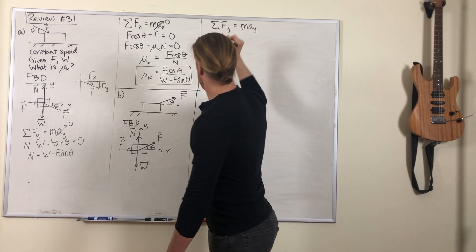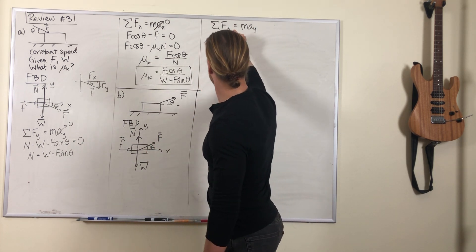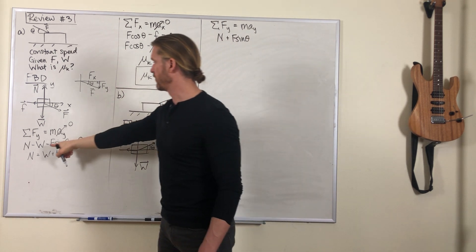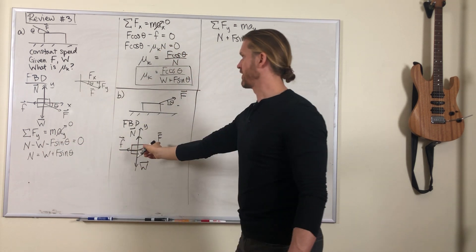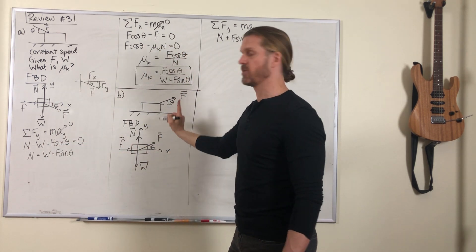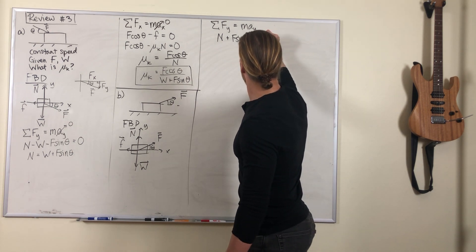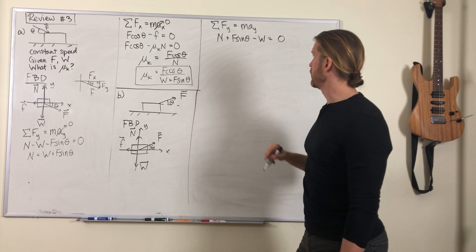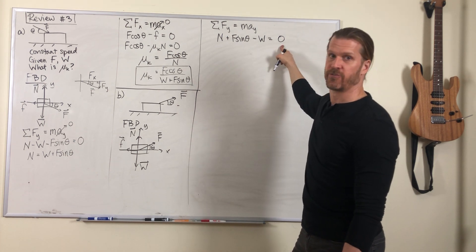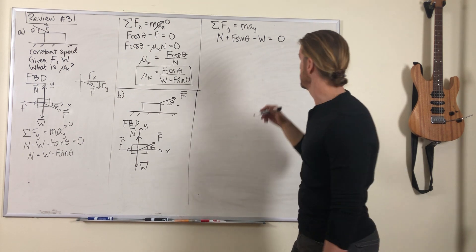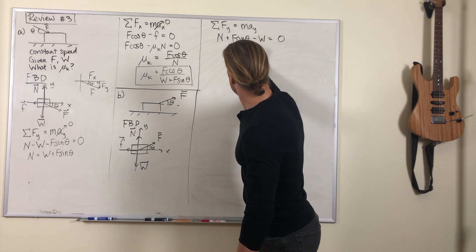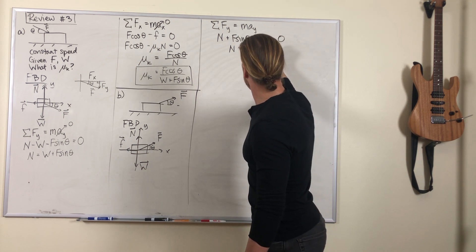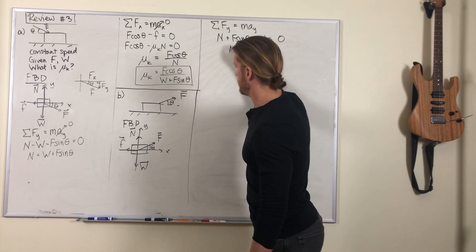We've got N plus F sine theta. Before it was minus F sine theta, but now this vector is above the horizontal so that y component points up. We've got gravity force and the acceleration is still zero. This thing is not moving in the y direction. So N is now W minus F sine theta.